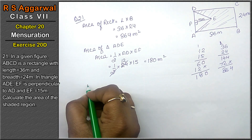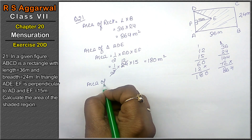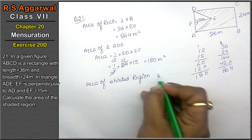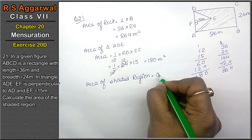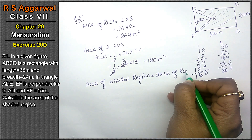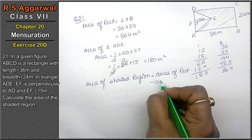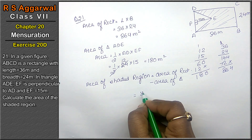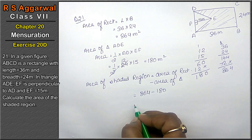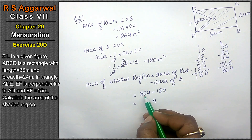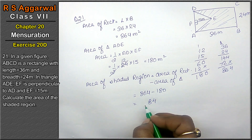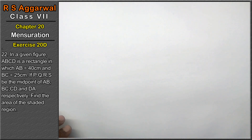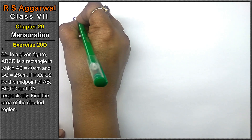Area of shaded region equals area of rectangle minus area of triangle. Area of rectangle is 864 and area of triangle is 180, so the area of the shaded region is 684 meters square. That is the answer.